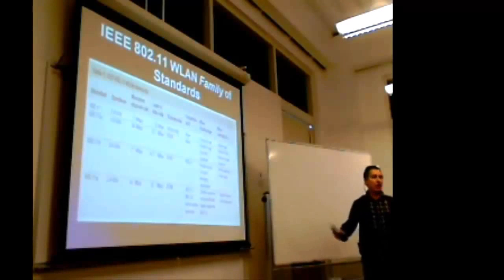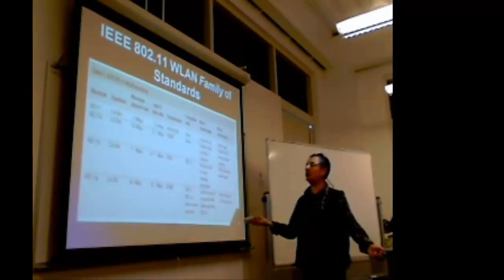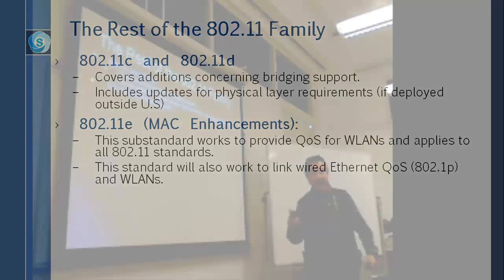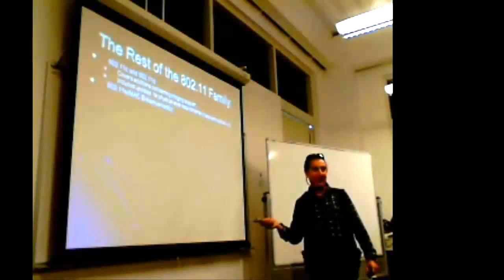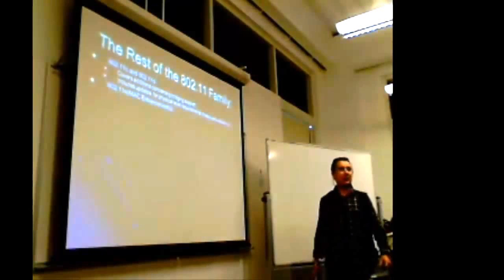Our objective is security, so let's look at that. There are other amendments: 802.11c covers additional bridging support and physical layer requirement updates. 802.11d adds more physical layer requirements. 802.11e is a MAC enhancement improving quality of service, and can link with wired internet via IEEE 802.11p. 802.11f is the Inter-Access Point Protocol, solving roaming problems and resource sharing. 802.11h provides better spectrum management than 802.11a for European requirements, including power control and dynamic transmit frequency selection. Feel free to explore the others — J, L, M, N and beyond — for your e-portfolio.